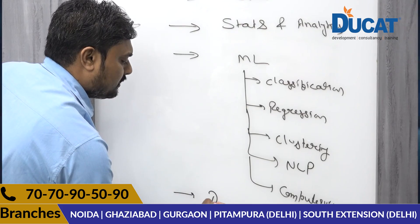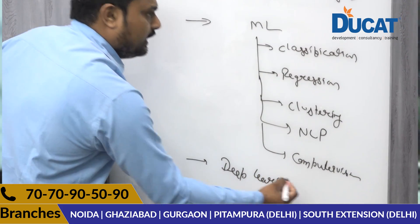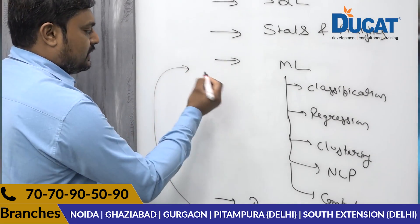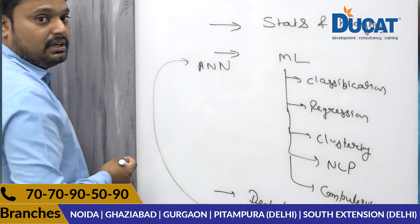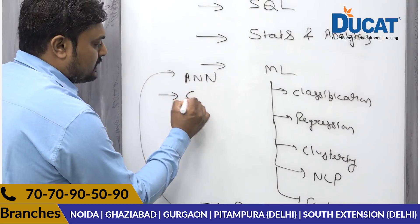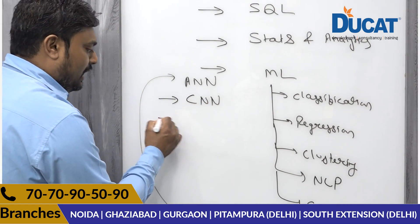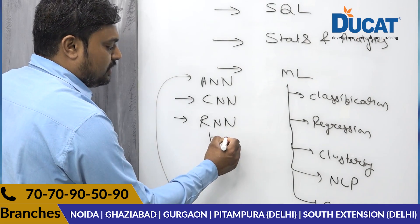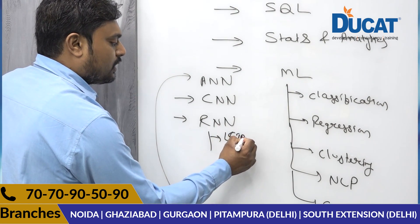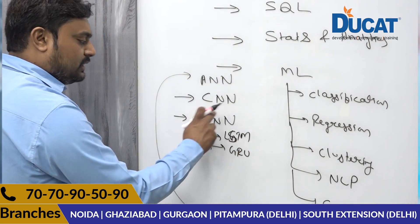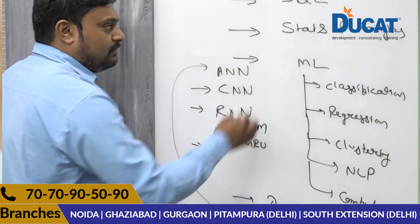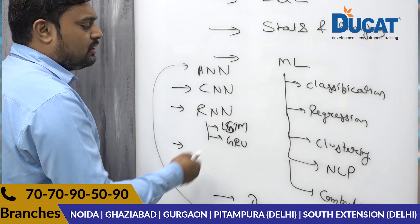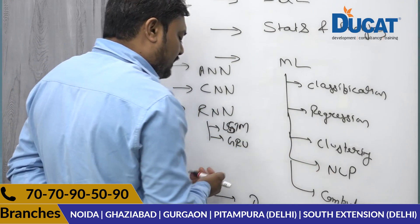The next module is deep learning. In deep learning we will be covering neural network analysis — first is ANN (Artificial Neural Network), second is CNN (Convolutional Neural Network), and last is RNN (Recurrent Neural Network). We have two flavors of RNN: LSTM and GRU. In machine learning, NLP is implemented with TF-IDF vectorizer and Count vectorizer, whereas in neural networks, NLP is generally implemented with word embeddings.